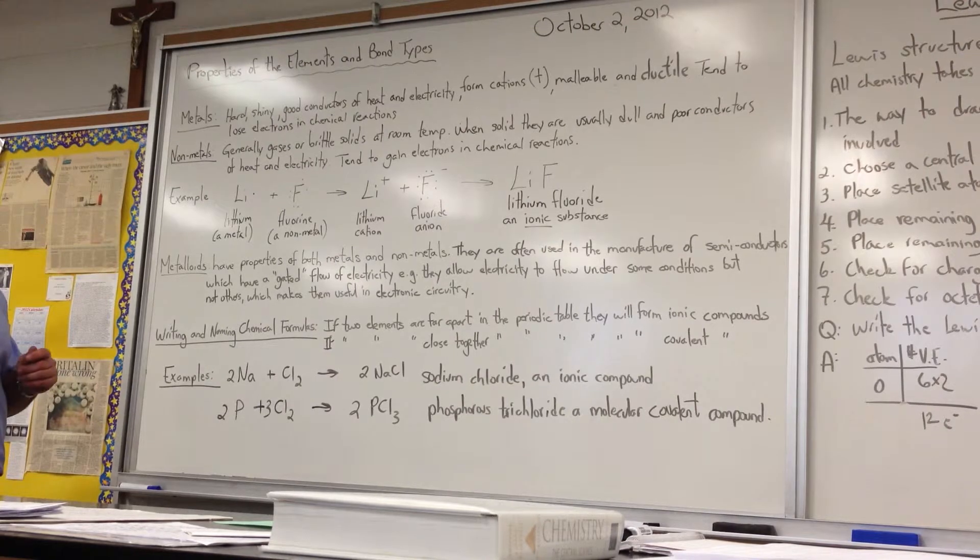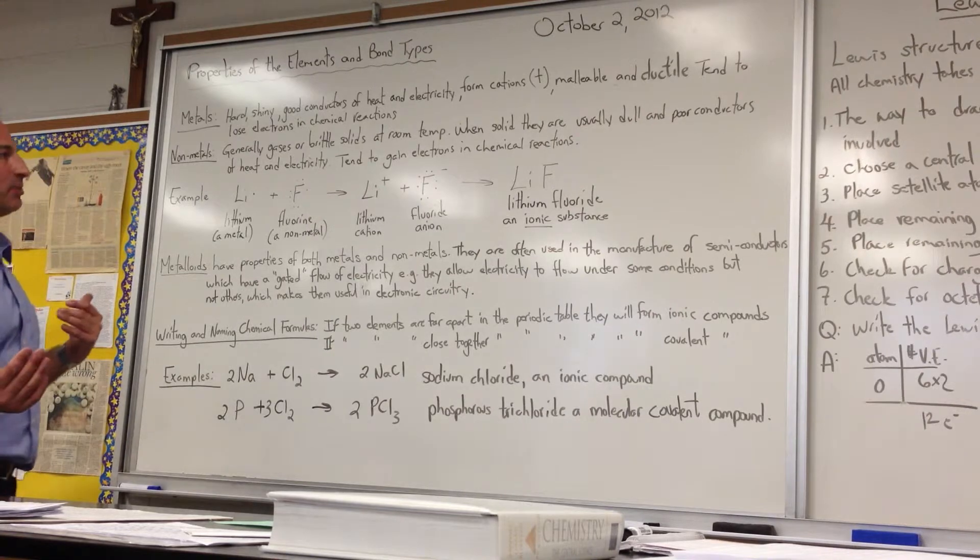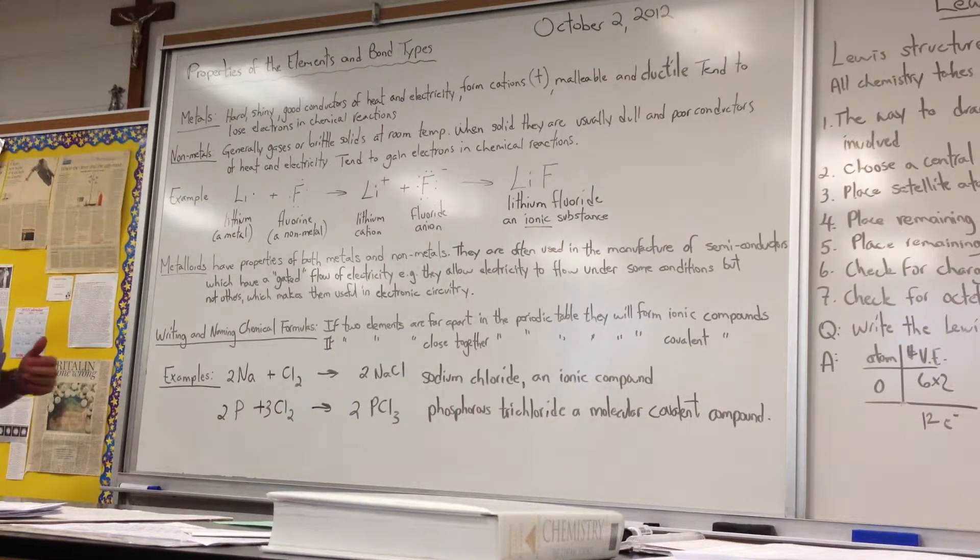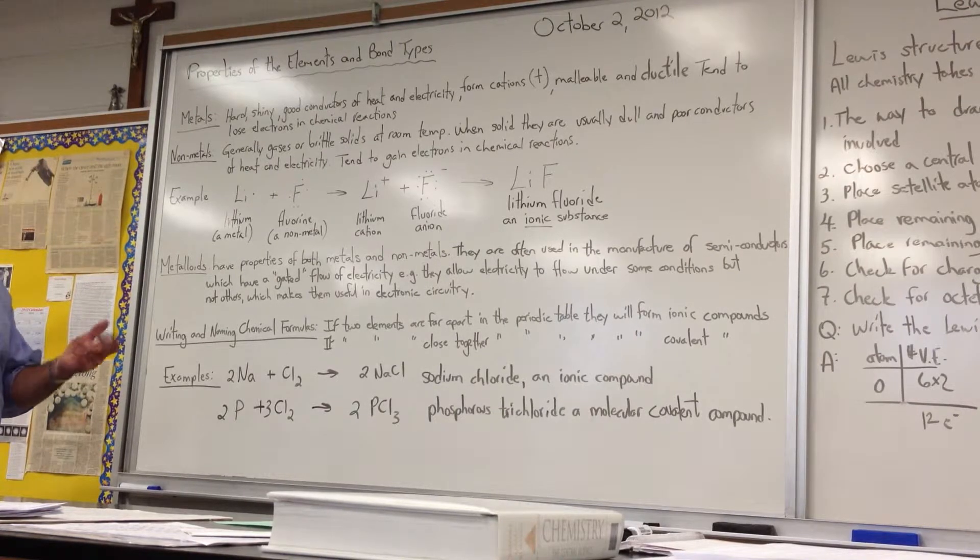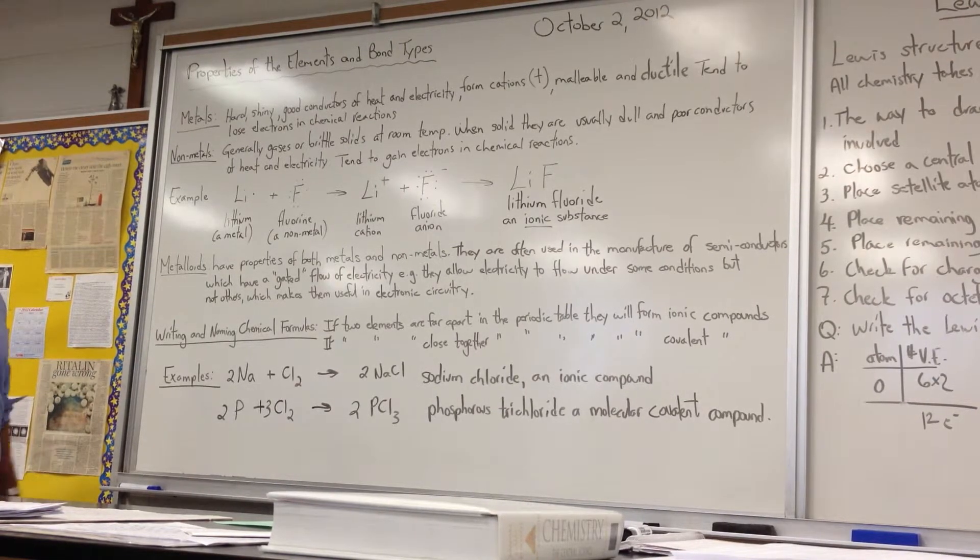So, for example, the rule of thumb I usually teach is that if two elements are far apart on the periodic table, they're going to form an ionic substance. And when they're close together on the periodic table, they more generally will form a covalent bond. They tend to share electrons.